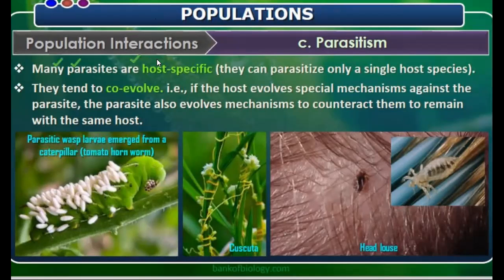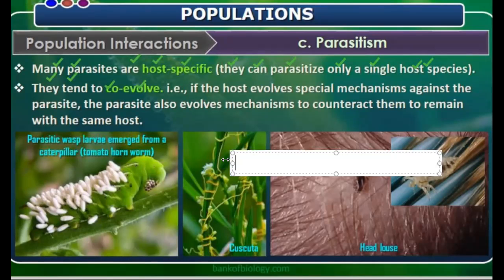Many parasites are host-specific, that is they can parasitize only a single host species. They tend to co-evolve. For example, lice attack human beings and other mammals. As mammals evolve, the lice also co-evolve.